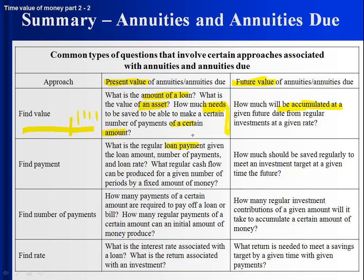Finding the payment: a loan payment, or if you have a given amount of money, what's the regular cash flow? The focus here is on how much you should save. For the number of payments: if paying off a loan, how many regular payments are needed to pay it off? If you have a certain amount of money and are withdrawing a fixed amount, how many withdrawals can you take? And in the future value context, how many savings contributions will it take to reach a goal? Future value is really all about saving; present value is often about loans or withdrawing a fixed cash flow.